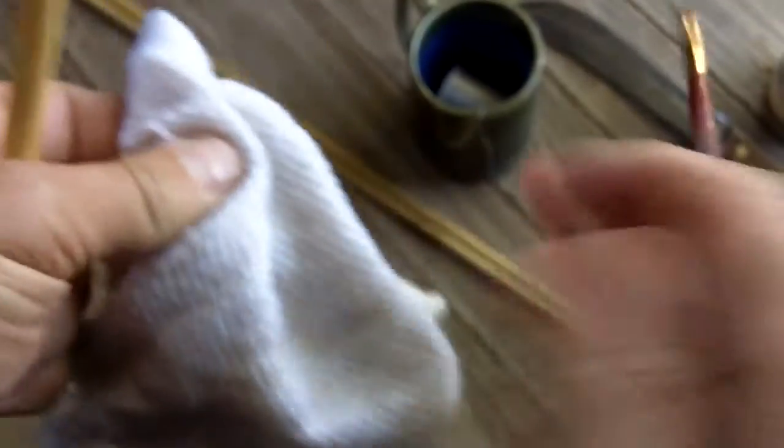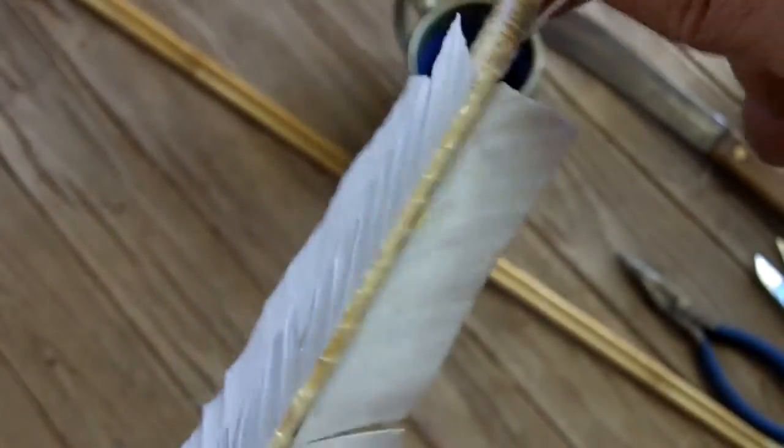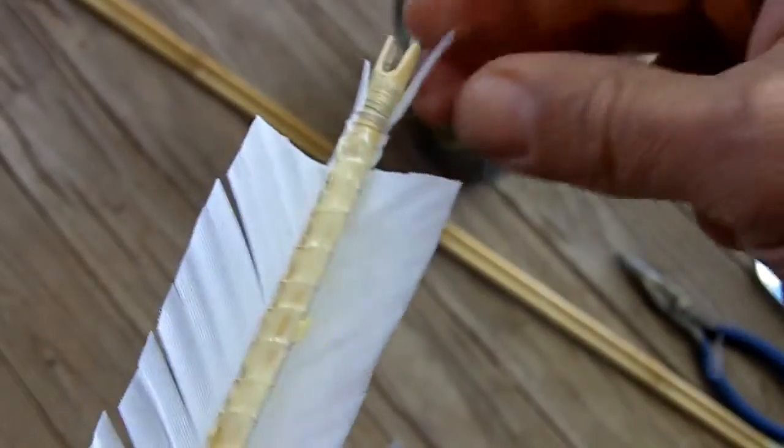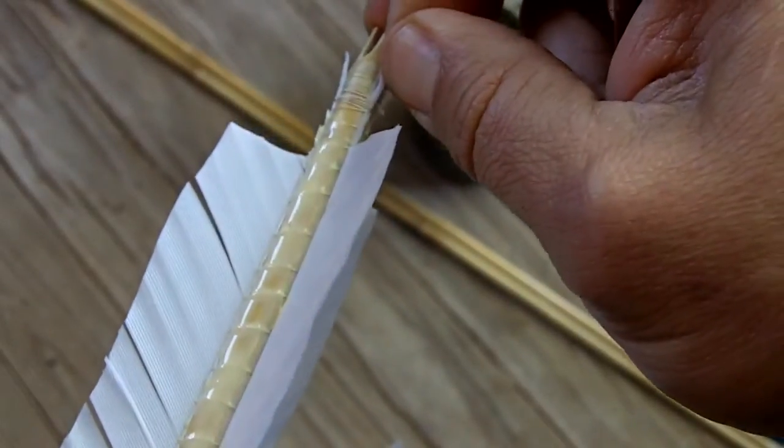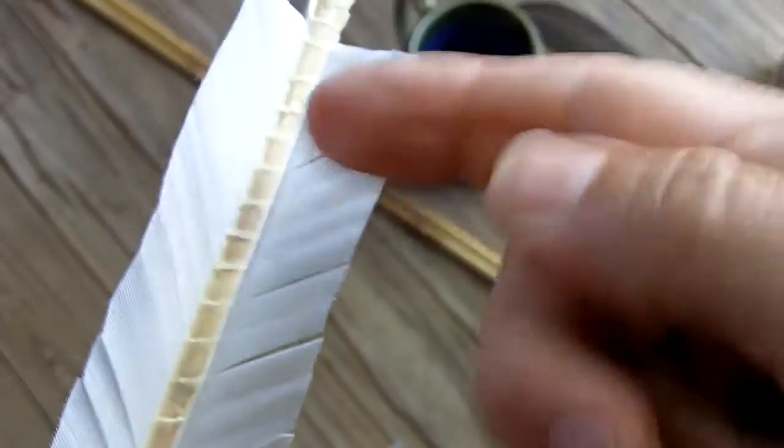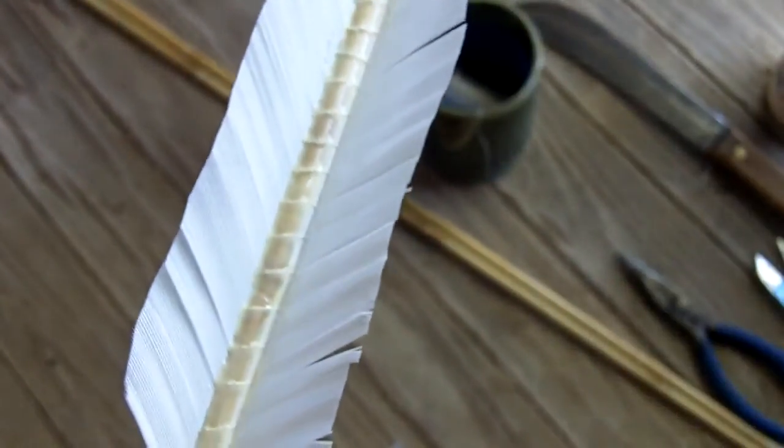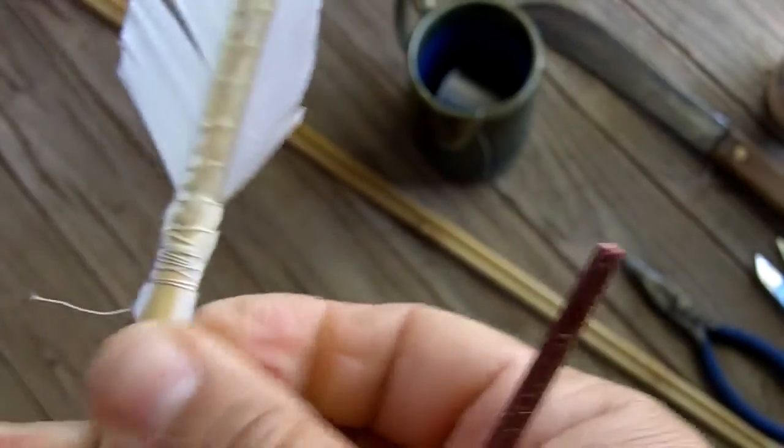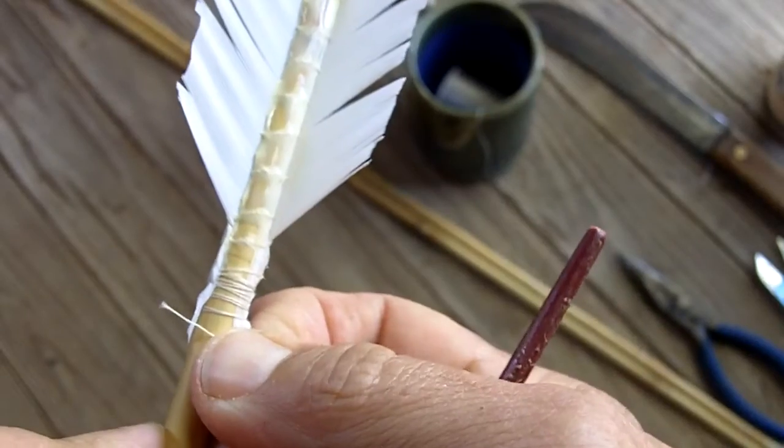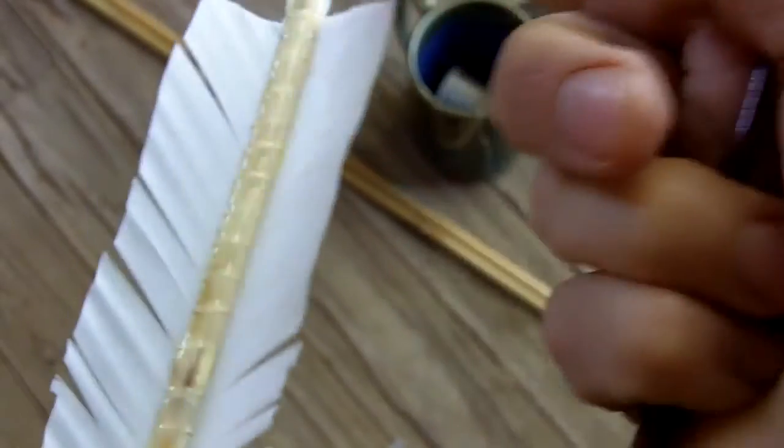Okay, and while the glue is still tacky, I can pull on these to make sure the fletching is tight down to the shaft. Because, like I said, the moisture from the glue will cause it to expand a little bit. So I'm just pulling this to stretch it out, make sure it's flat against the shaft.